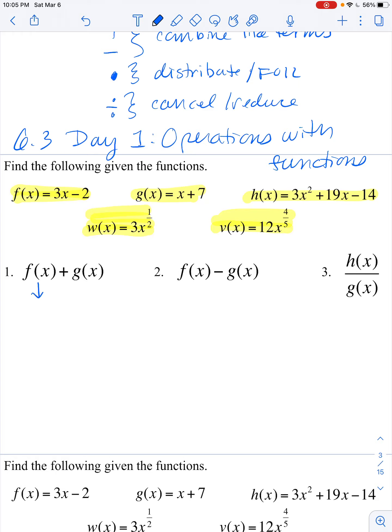So don't overthink this. Just literally take f of x, which is 3x minus 2, and then add, because it says add function g. So then I go look up here, function g is x plus 7. This positive in the middle doesn't really need to distribute because it won't change anything.